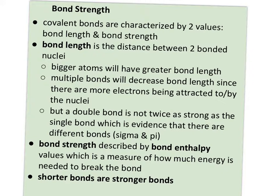Bond strength is described by something known as bond enthalpy — enthalpy referring to energy. It's a value which measures the amount of energy needed to break a bond, so a bigger bond enthalpy means a stronger bond. Shorter bonds are going to be stronger bonds, because the electrons are being held that much closer and tighter by the nuclei.